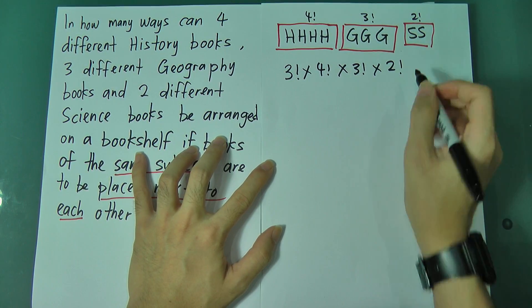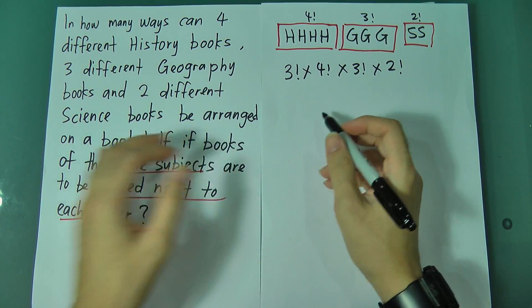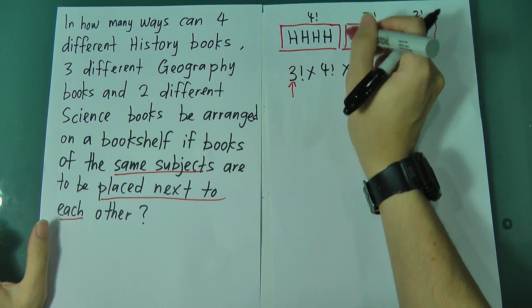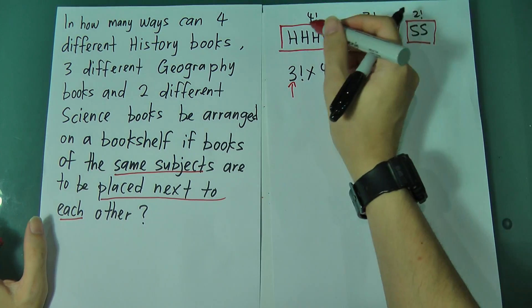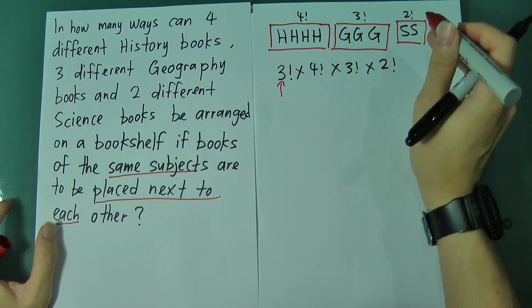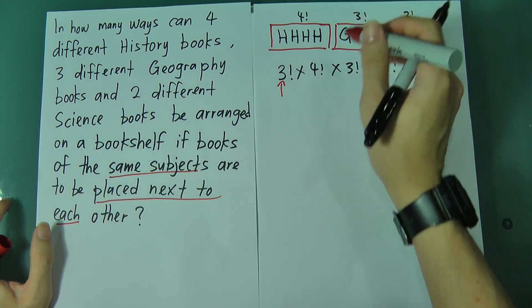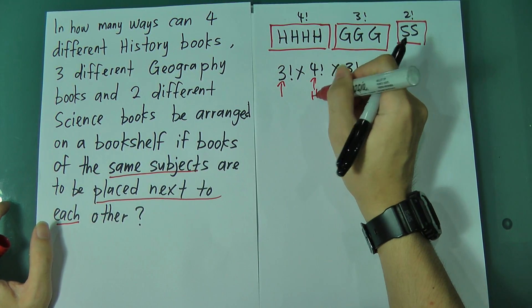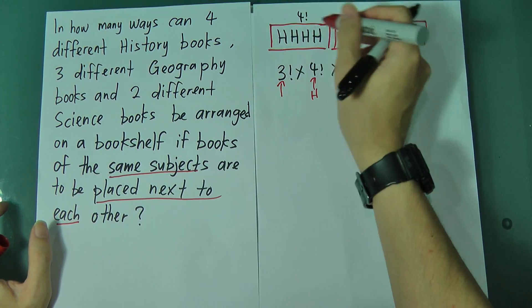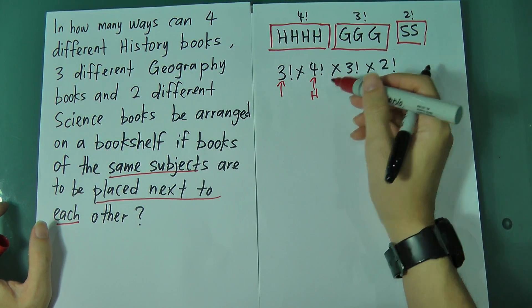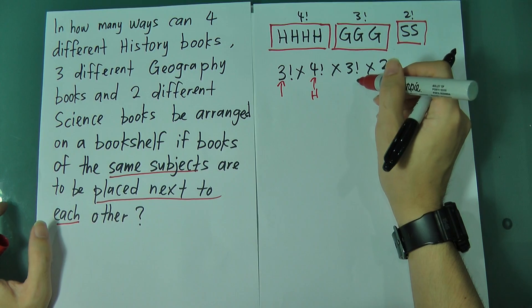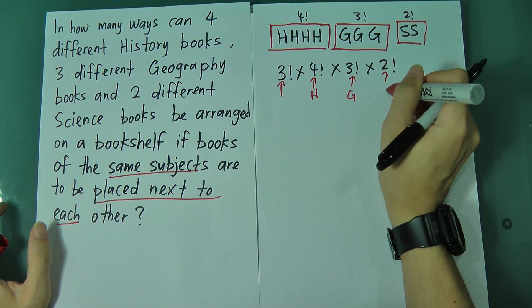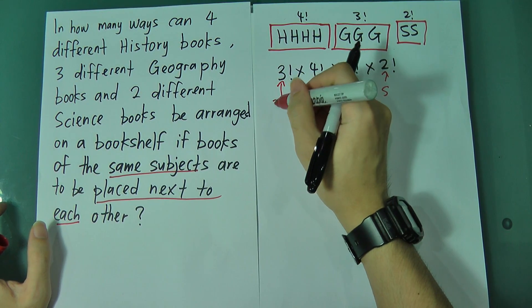To explain once more: the 3 factorial is for the 3 big subject groups. Imagine you have 3 books A, B, C — 3 books that can change place by themselves, we call it 3 factorial. Then the 4 factorial is for history books changing place among themselves. The 3 factorial is for geography, and the 2 factorial is for science.